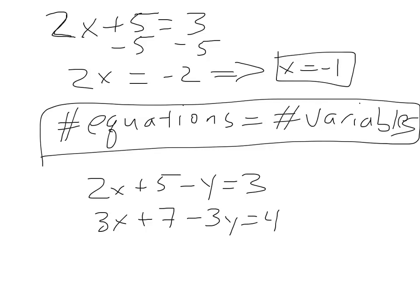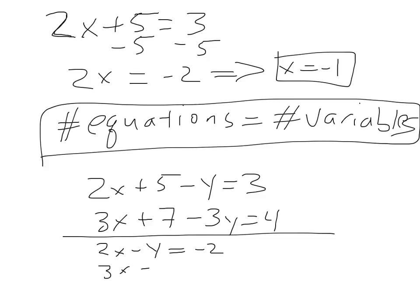So I might use some tricks where I bring all the constants over to one side of the equation. In this case we can rewrite it as 2x minus y equals negative 2, and then 3x minus 3y equals negative 3. I took the 5 and the 7 over and got these two equations.